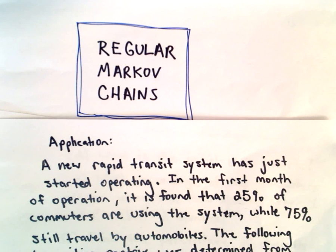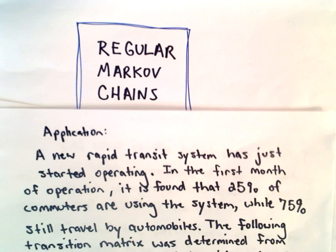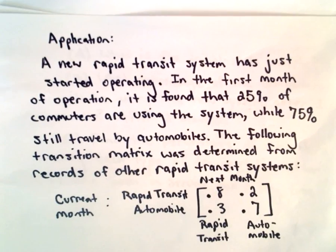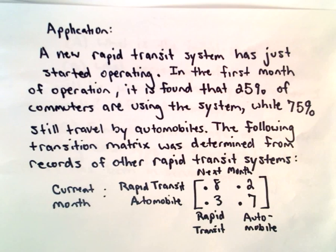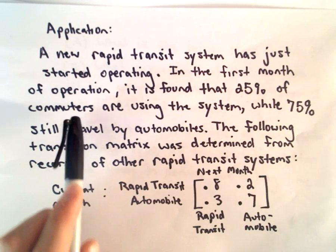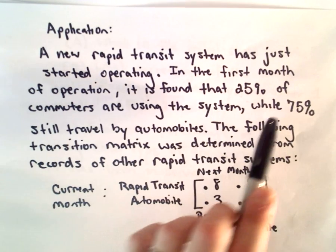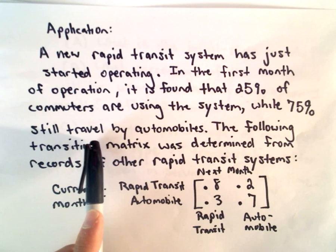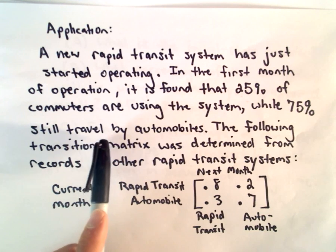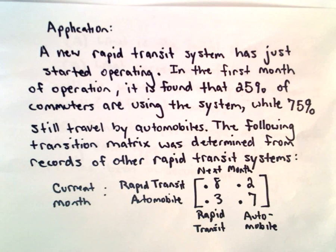Here we're going to look a little bit more at regular Markov chains and do an application problem just to tie everything together again. Suppose there's a new rapid transit system that's just started operating, and in the first month of operation it's found that 25% of commuters are using the system, while 75% still travel by automobiles.